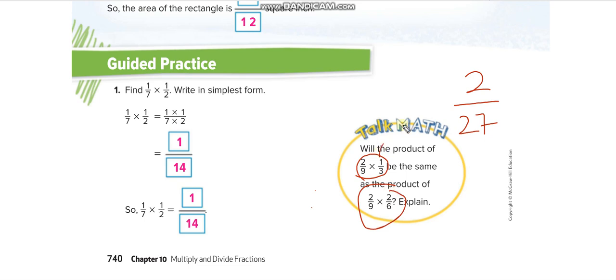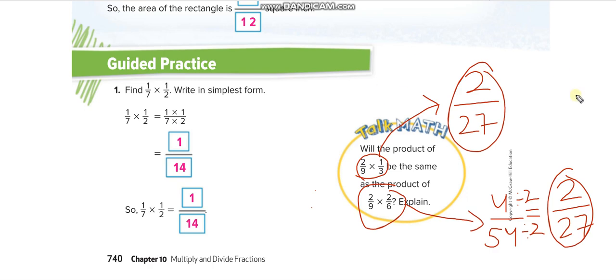Let me solve this one here: 2 times 2 is 4, and 9 times 6 is 54. Can I simplify this? Yes, I can simplify: divide by 2. 4 divided by 2 is 2, and 54 divided by 2 is 27. So you guys can see that these two are the same. Let us move to the next page.